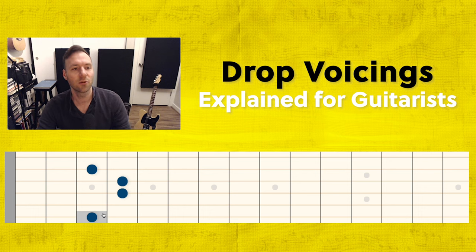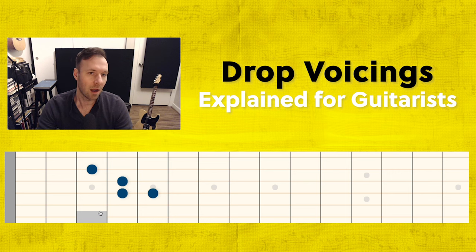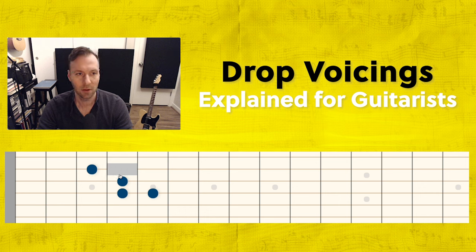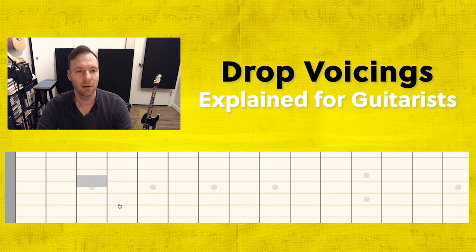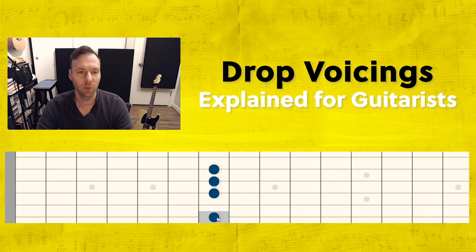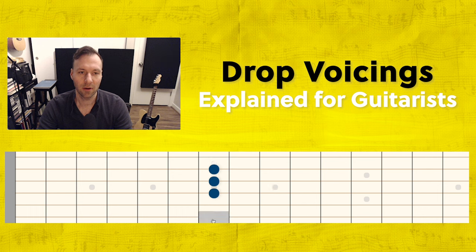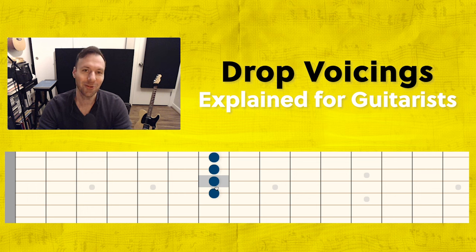I'm giving you all this fretboard move-around explanation because if you really want to know this, it helps to see that process. Instead of just memorizing 'this is a drop three voicing,' now you know why. We started with the close position, took the third note, moved it down an octave - that was a direct inversion of the voicing we're familiar with. Now let's do our test: take the bottom note, move it up an octave, count from the highest - one, two, three, four - it's the third from the highest note. Drop three voicing.